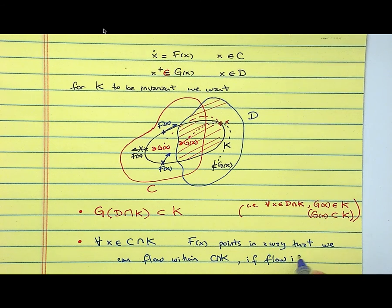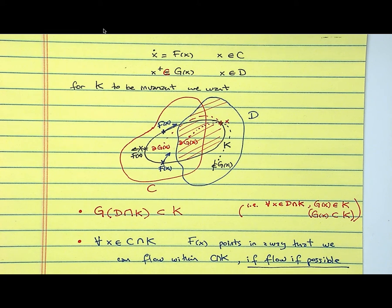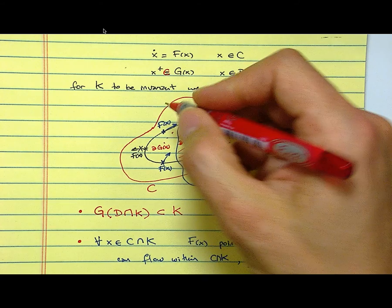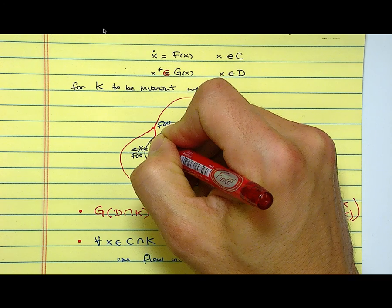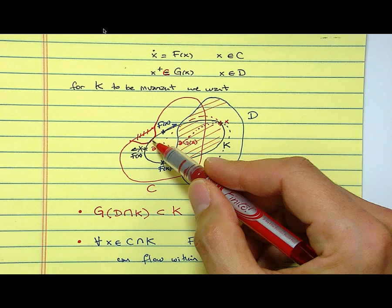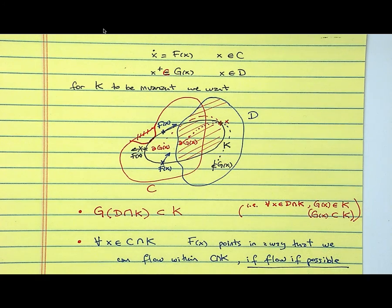And remember what I said: if flow is possible. And this is key. In other words, if I'm at a point where the flow set and the set K boundaries coincide, then flow is not possible even because of C. So I could refine this set a little bit. At these points, I don't care if the vector field is pushing me in this direction. It's okay.